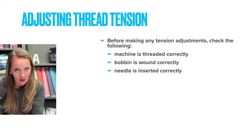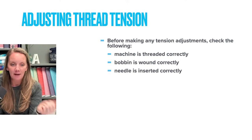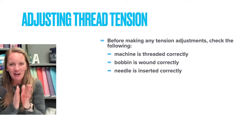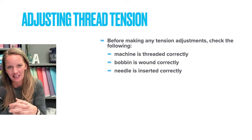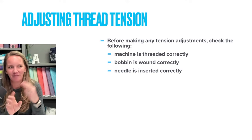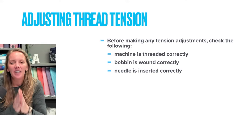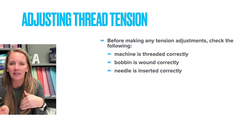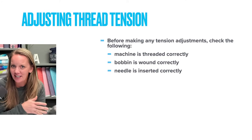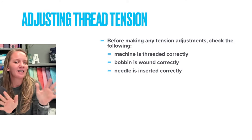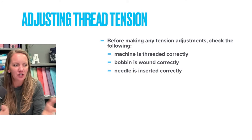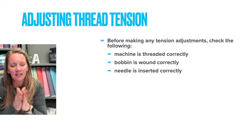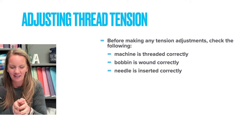First, make sure your machine is threaded correctly — in fact, that should be the first two steps: check the threading, check the threading. I don't want to make any adjustments on the tension only to find out it wasn't threaded correctly and now I need to fix a problem I just created. This is especially the case if you're having tension problems out of the blue — nothing's changed and you're like 'the stitches look bad.' Check that threading. I did a lot of adjustments in the beginning only to realize it wasn't in the tension discs.